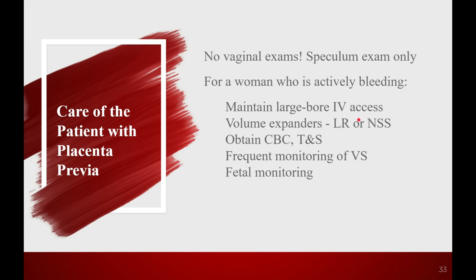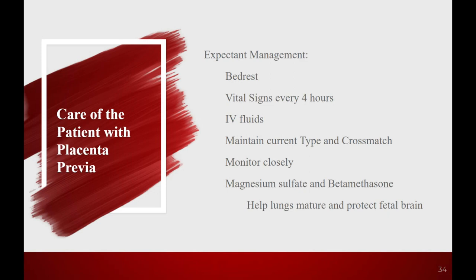While drawing the IV, get labs: a CBC to find out hemoglobin and hematocrit, and a type and screen so we can cross-match and have blood products ready in case she needs transfusion. We want frequent monitoring of vital signs — mom's vitals deteriorate in proportion to the amount of bleeding. She can lose two liters and you'll see a drop in blood pressure and an increase in heart rate, usually heart rate goes up first. Monitor the baby too, because if mom's losing blood, baby is losing oxygen.